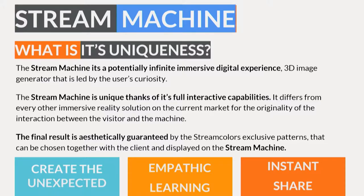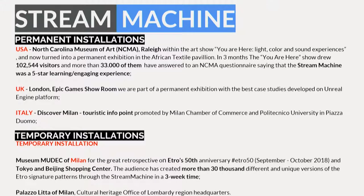The uniqueness of Stream Machine is that it can create infinite possibilities of design, is fully interactive — requiring people's interaction — and is guaranteed by our research in art. We also put in empathic learning, so every time you edit an image, you can see the details and original information about the artwork, then send an email or create a product starting from that.